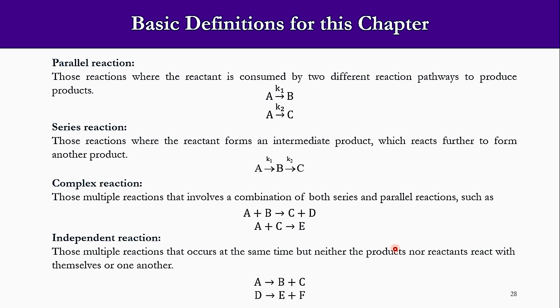Basic definitions for this chapter include parallel reactions, series, complex, and independent reactions. Parallel reactions are those reactions in which the reactant is consumed by two different reaction pathways to produce products, like you can say A goes to B and then the similar A goes to C. There are multiple pathways included.